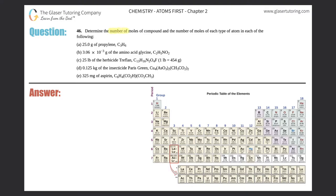Number 46: determine the number of moles of compound and the number of moles of each type of atom in each of the following. This is going to be a big problem, but we'll try to do it as quickly as we can. There are some things you need to master first before doing this problem. We first want to find the number of moles of a compound, then transfer into the moles of each type of atom.